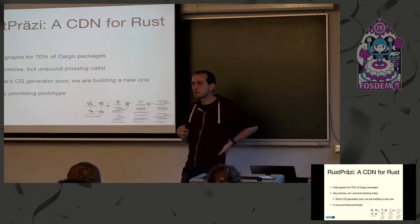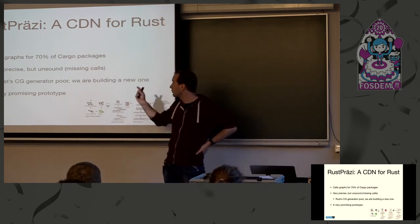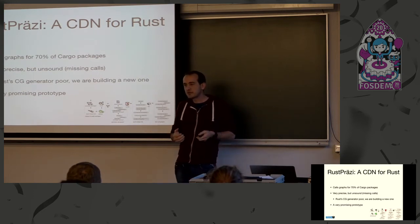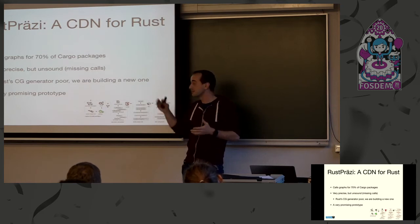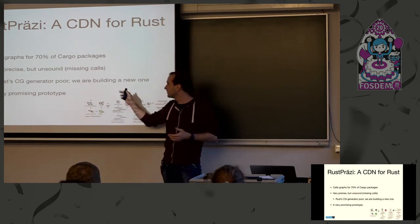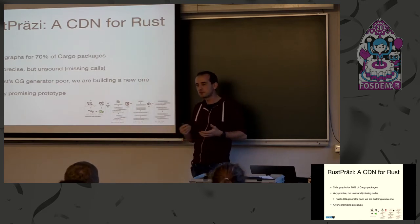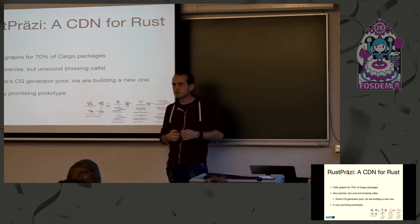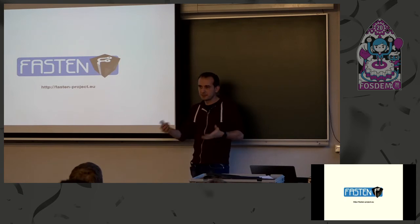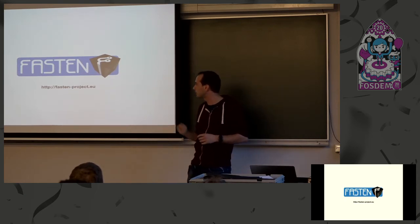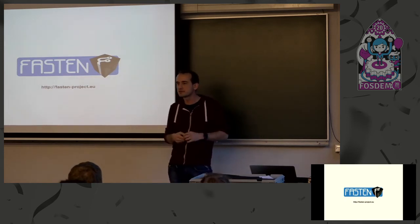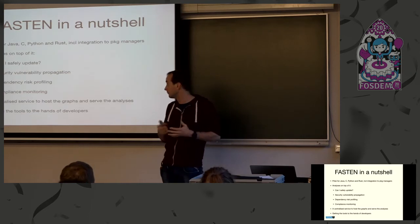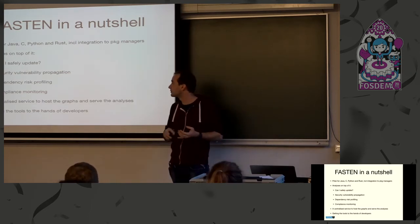We built an initial prototype, which we presented last year at FOSDEM. We built call graphs for 70% of all Cargo packages — Cargo is the package manager for Rust. It was a promising prototype, though the call graph generator for Rust was in poor shape back then. Based on those ideas, we designed and secured funding for the FASTEN project — a large European project with seven partners across Europe — that aims to implement this technology for Java, C, Python, and Rust.